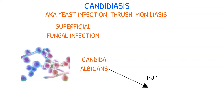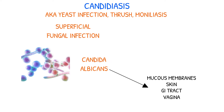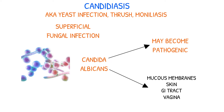Candida albicans is normally found on the mucous membranes, the skin, the GI tract, and the vagina. However, under certain circumstances, it can become pathogenic, particularly in those who are critically ill or immunosuppressed.